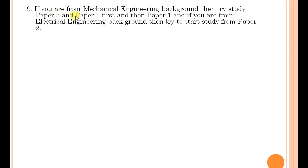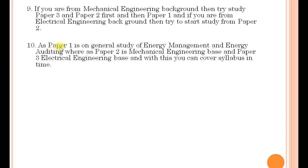If you are from a mechanical engineering background, try to study paper three and paper two first, then paper one. If you are from an electrical engineering background, try to start studying from paper two. This is because paper one is on general study of energy management and energy auditing and is common to both electrical and mechanical engineering, whereas paper two is mechanical engineering based and paper three is electrical engineering based.